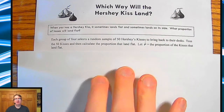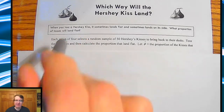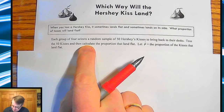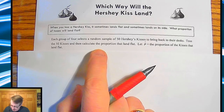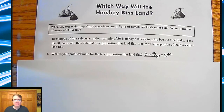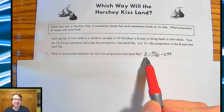In this experiment, you get 50 Hershey's Kisses — about half to two-thirds of one of those standard bags — and you throw them all up in the air to see how many land flat. I did this and ended up getting 22 out of 50 landing flat. That turns out to be a proportion of 0.44, or 44%. Since this is based on a sample, not the population, this is an estimate — we call this p-hat.